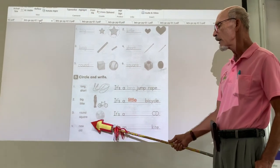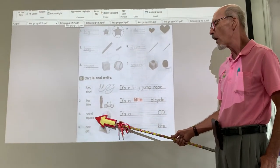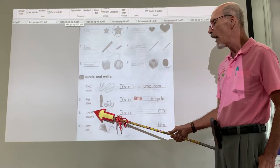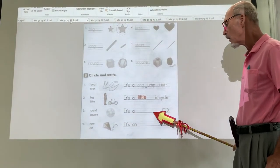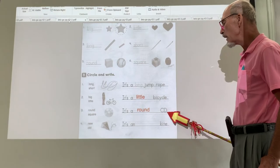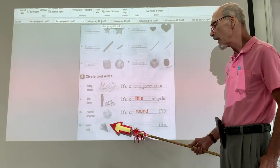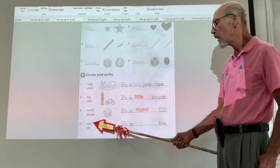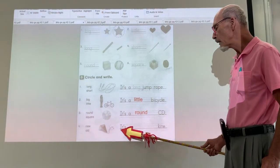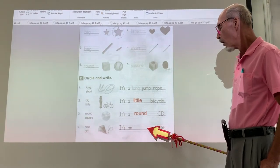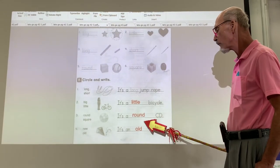Look at this. What is this? A CD, right? Number three. Round or square? What is this? It's a round CD. And looking at this, it's new or old. It's an old kite. Little, round, old.